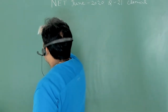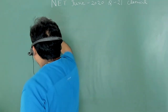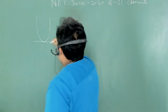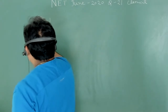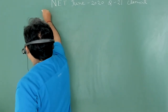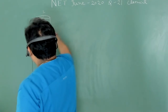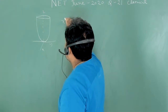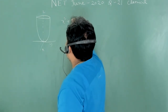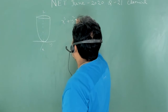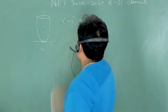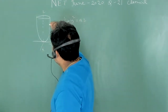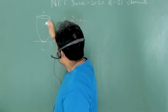There is one particle which is moving on a paraboloid. This is the shape of the paraboloid, with X axis, Y axis, and Z axis. The examiner has given us the equation of the paraboloid: X² + Y² = AZ. A particle of mass M is constrained to move on the inner surface of the paraboloid.